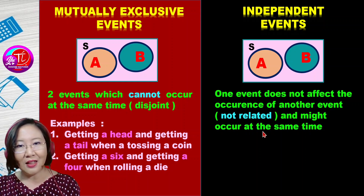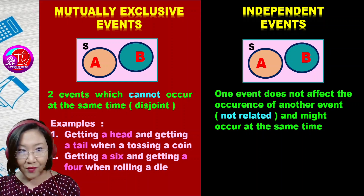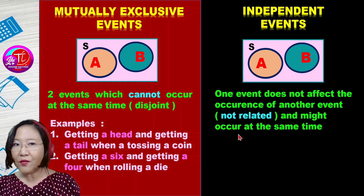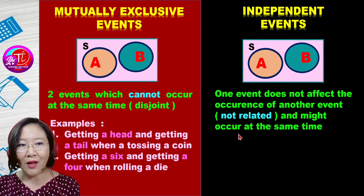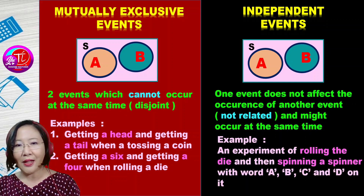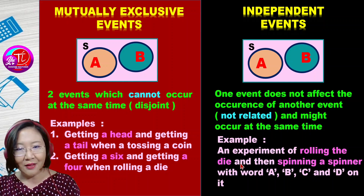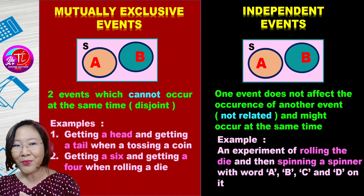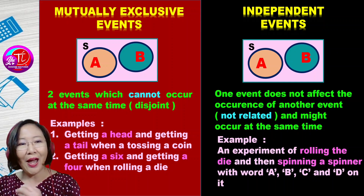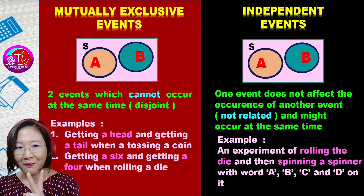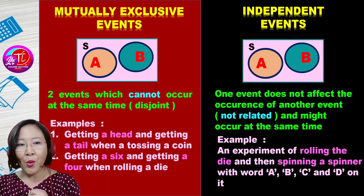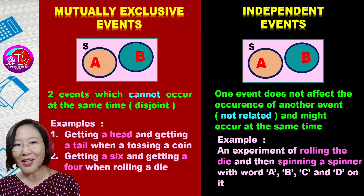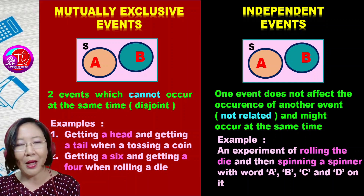However, in an independent event, there are also two events which are different, but they are not related at all, because you are doing them from a different device or using a different thing. For example, here is an experiment on rolling the die and spinning a spinner with the word ABC on it. So you are using two different things — a die and a spinner. At that moment, these are two different events but they are not related, so you can do them together. You can at the same time throw the die and spin the spinner. So these are called independent events.